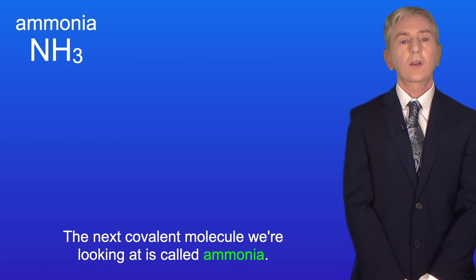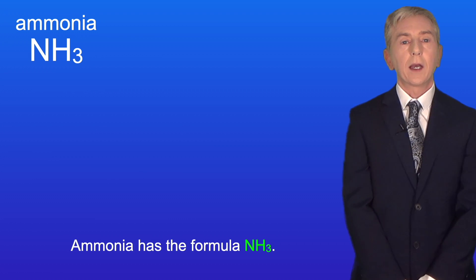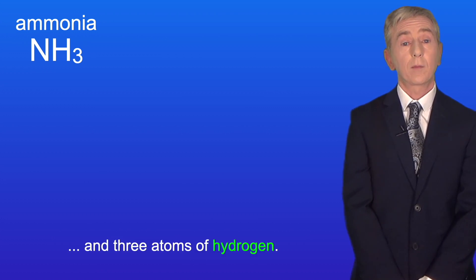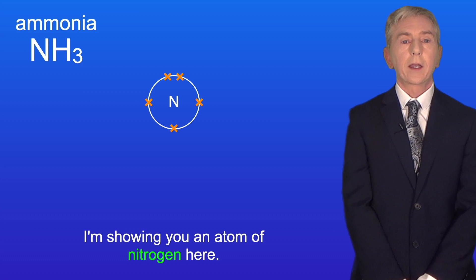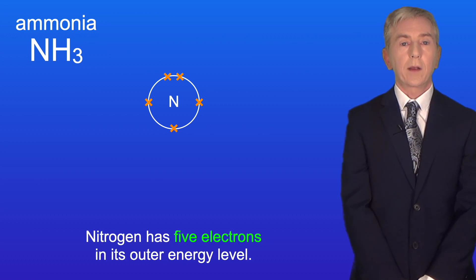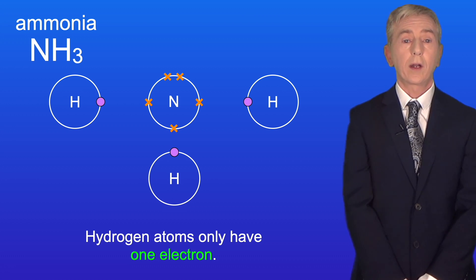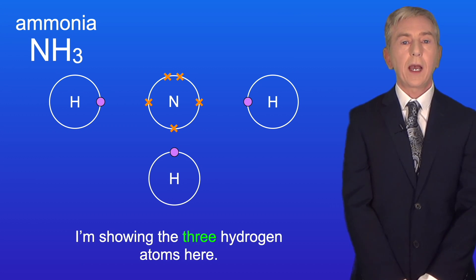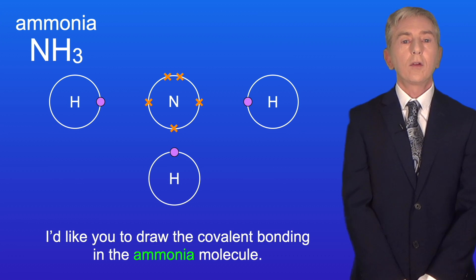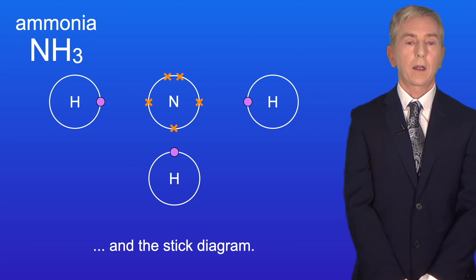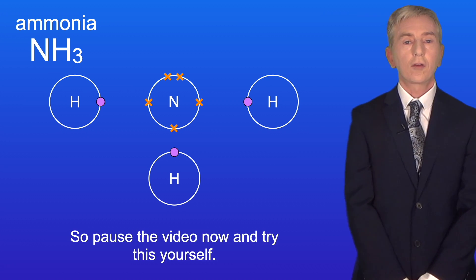The next covalent molecule we're looking at is called ammonia. Ammonia has a formula NH₃, which tells us that an ammonia molecule contains one atom of nitrogen and three atoms of hydrogen. I'm showing you an atom of nitrogen here. Nitrogen has five electrons in its outer energy level. Hydrogen atoms only have one electron, and I'm showing the three hydrogen atoms here. I'd like you to draw the covalent bonding in the ammonia molecule — that includes the energy level diagram, the dot and cross diagram and the stick diagram. So pause the video now and try this yourself.